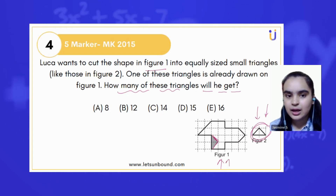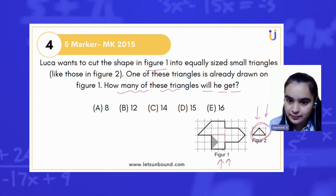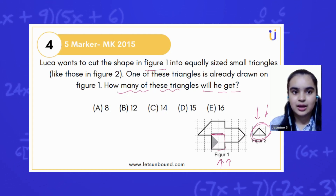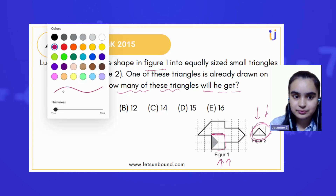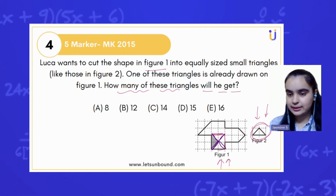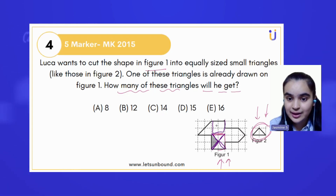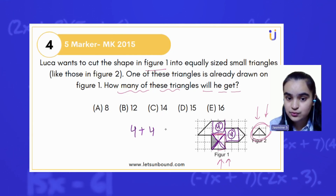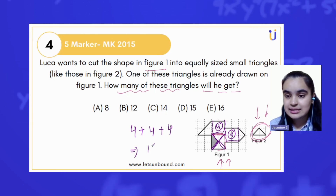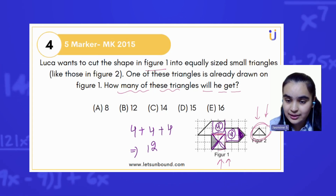Let's assume this part is a square. We can connect the lines and make it a square. Now in this square we have one, two, three, four triangles. So four triangles are in one square. We have one more square like this and one more square like this, so in total we have four plus four plus four, which is 12 triangles so far.